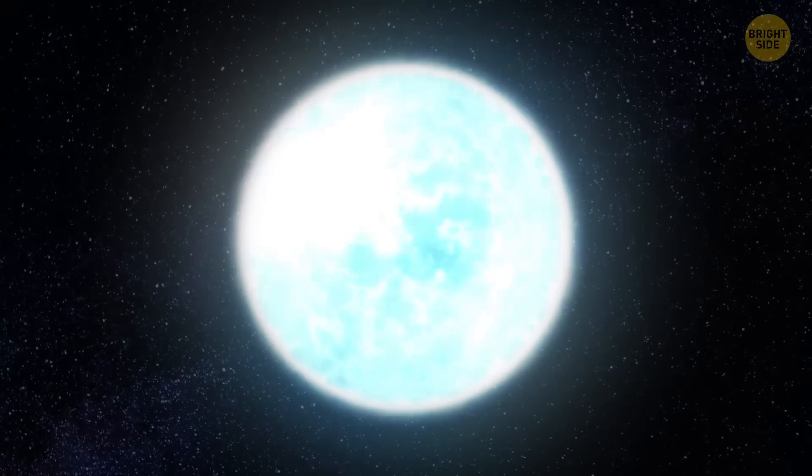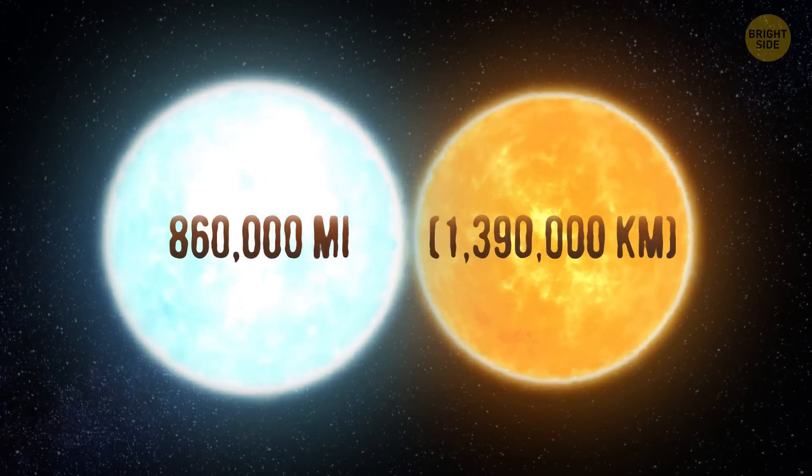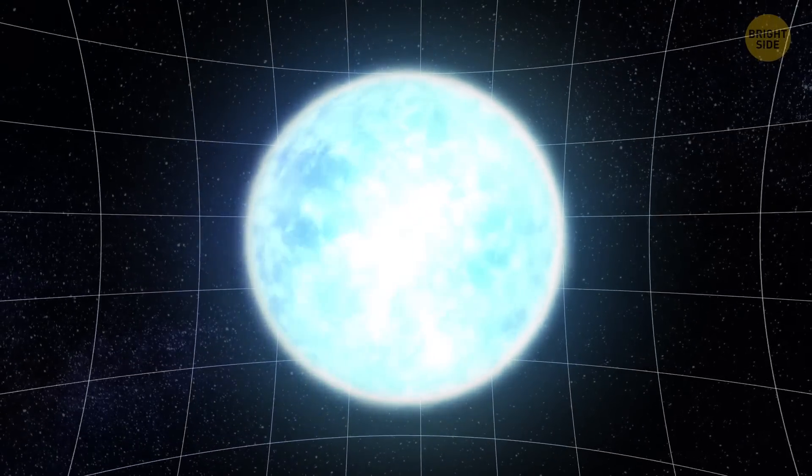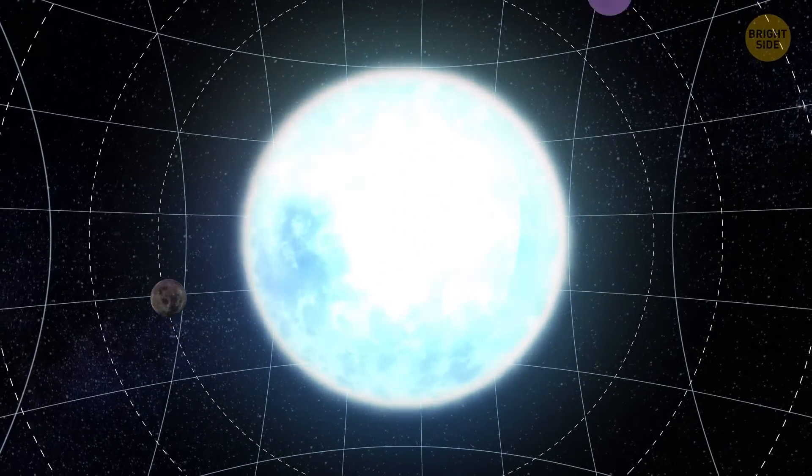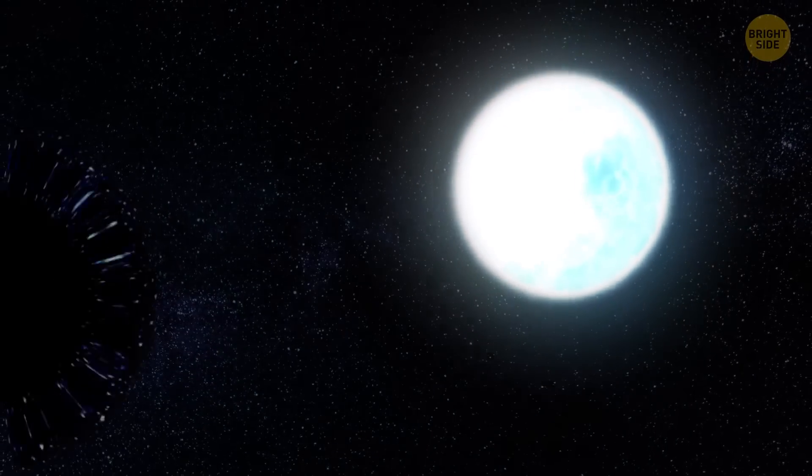Imagine a star the size of our Sun, about 860,000 miles wide. Such stars have enough weight to create a strong gravitational field, holding many planets in their orbit. And now, let's place a giant black hole next to it.